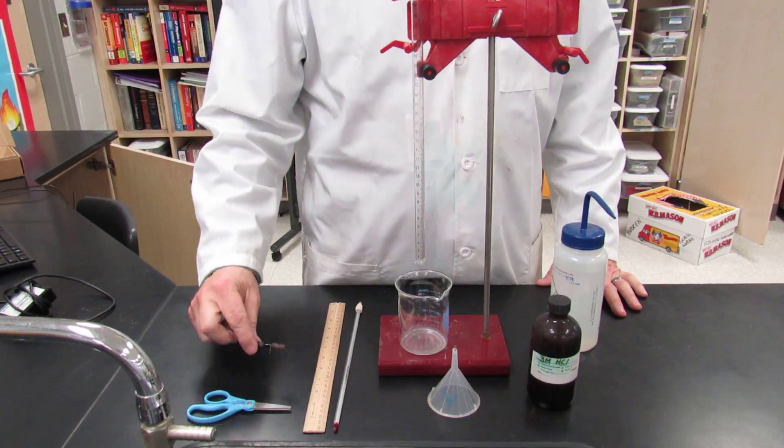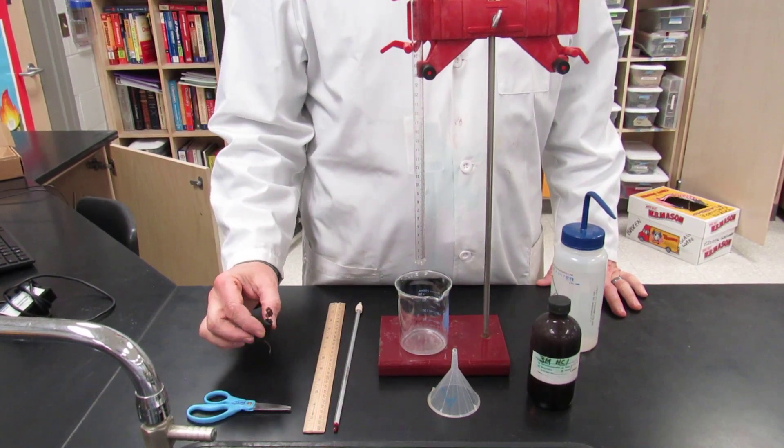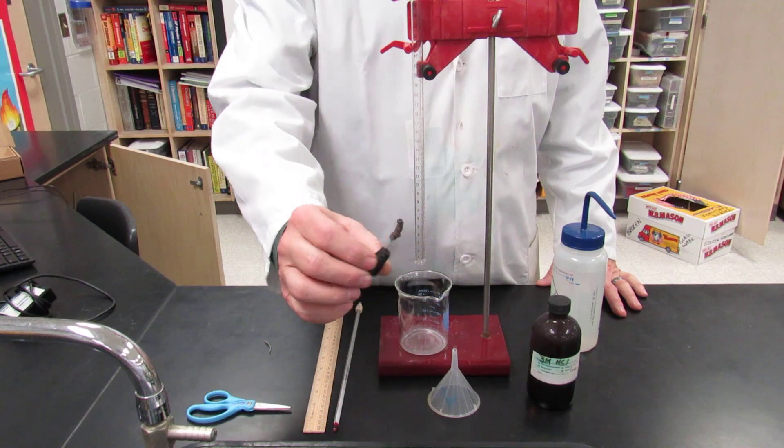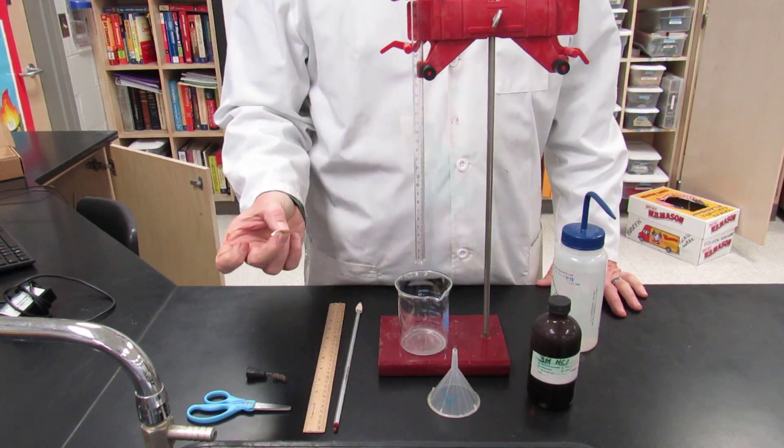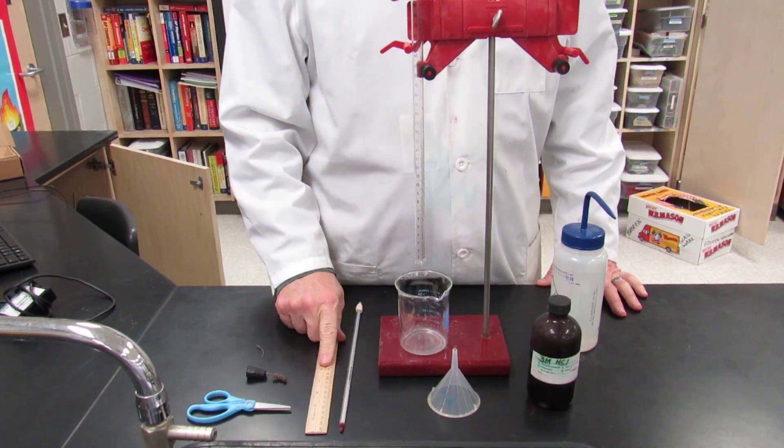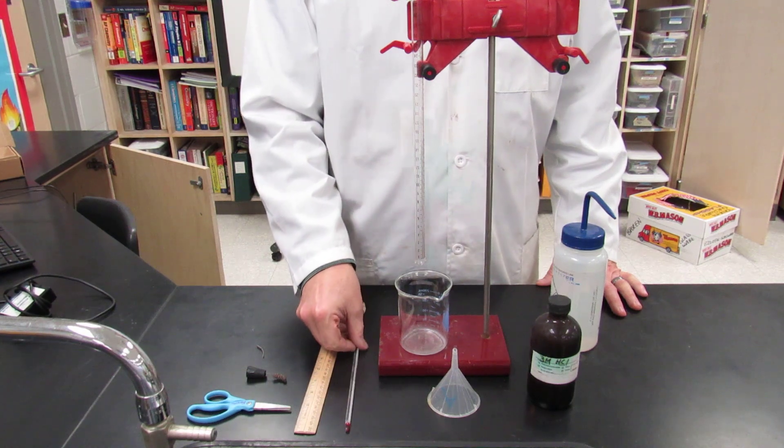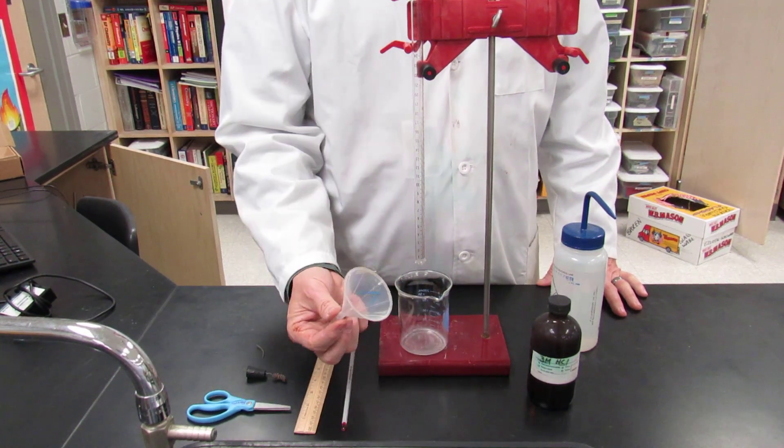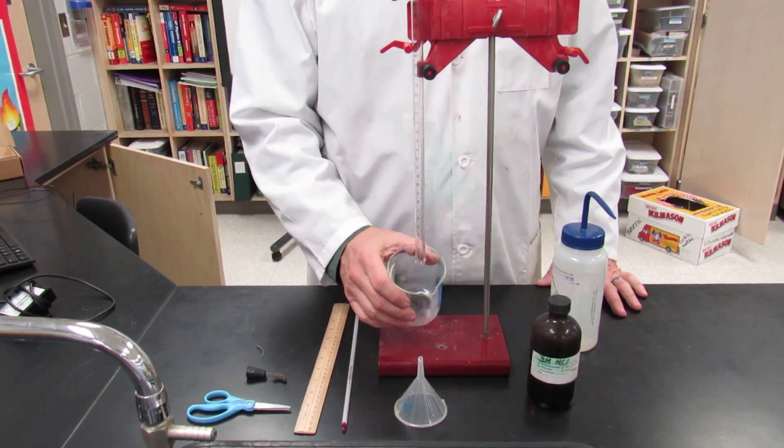Okay, first thing you need is a pair of scissors, a stopper with a coiled piece of copper in it coiled up into like a little spring, a piece of magnesium, a ruler, a thermometer, a plastic funnel, and a small beaker.